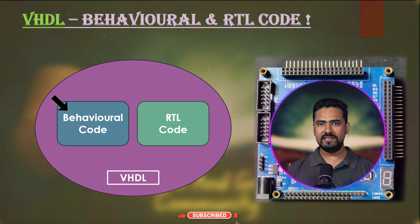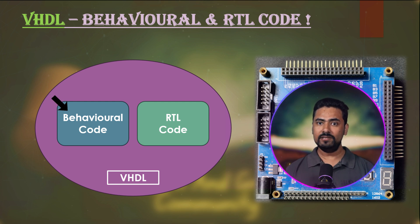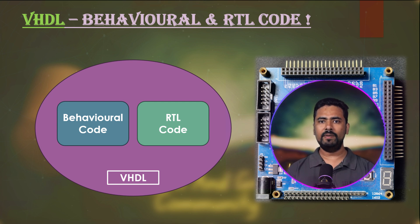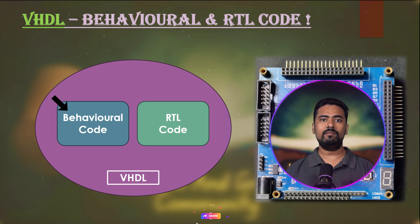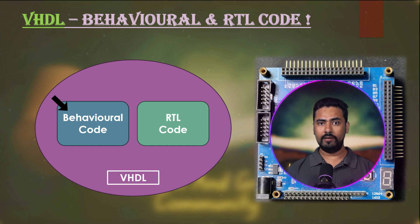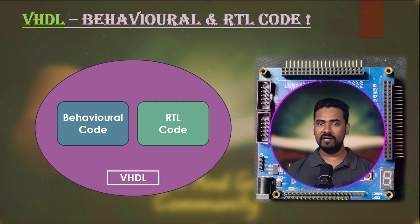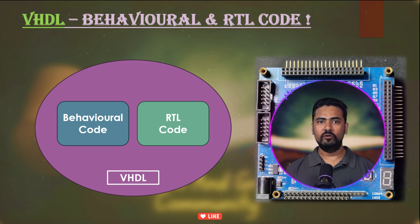Behavioral code in VHDL describes the functionality of your digital system at a higher level, with more focus on the behavior of your digital system rather than its physical implementation details. The problem with behavioral code is that it cannot be directly mapped to hardware. Although behavioral code is good for simulation to test functionality, we need RTL code which describes the hardware components and their interconnections, and this can be mapped to hardware elements in an FPGA or ASIC.